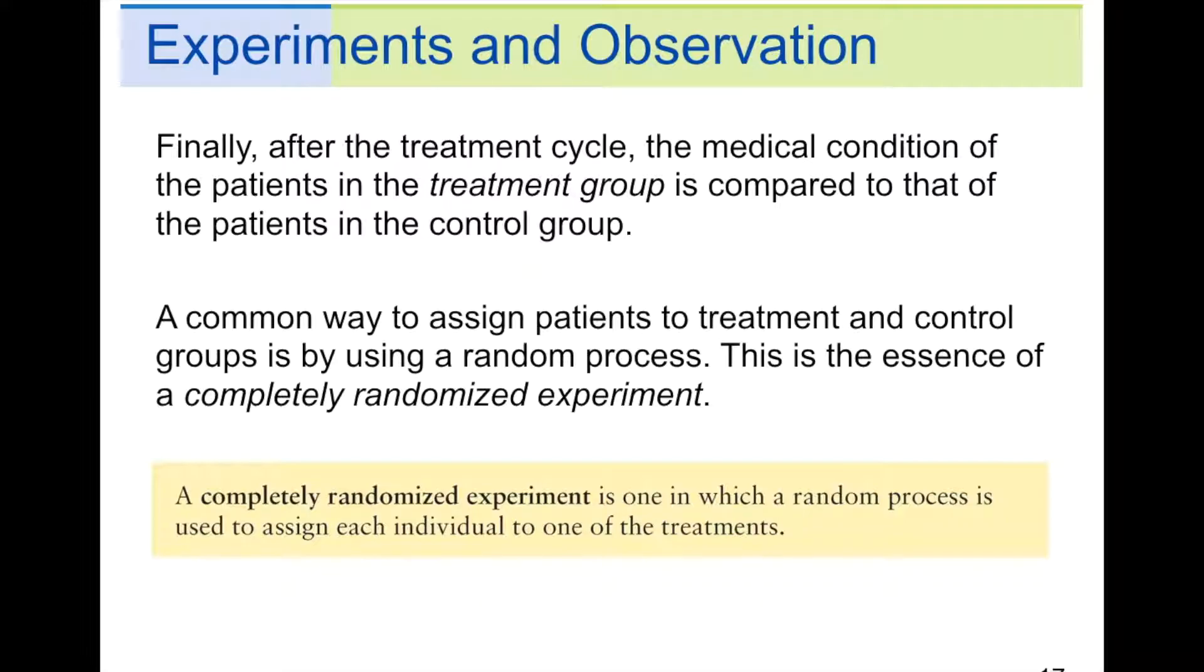Finally, after the treatment cycle, the medical condition of the patients in the treatment group is compared to that of the patients in the control group. A common way to assign patients to treatment and control groups is by using a random process. This is the essence of a completely randomized experiment. A completely randomized experiment is one in which a random process is used to assign each individual to one of the treatments. So, you can't just say, I'll take this guy and this guy for the placebo group and the other three for the control group. You have to randomize it in some random way, like using a computer or a random number table or a calculator.